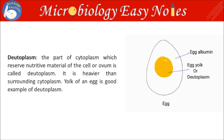Deutoplasm: the part of cytoplasm that reserves nutritive material of the cell or ovum is called deutoplasm. It is heavier than the surrounding cytoplasm. The yolk of an egg is a good example of deutoplasm.